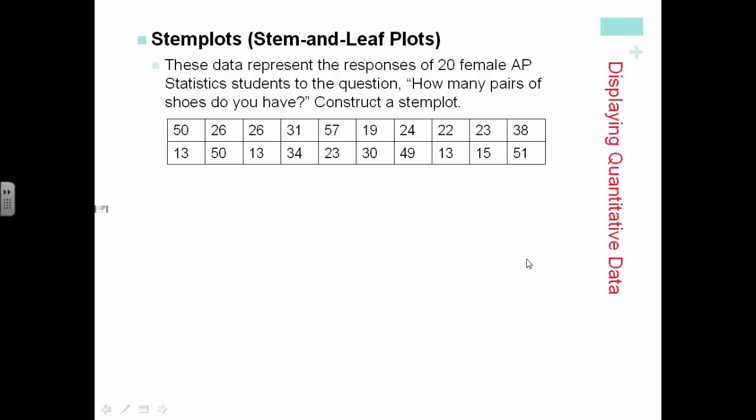Here's data that represent the 20 responses of female AP statistics students when asked, how many pairs of shoes do you have? We have our stems, which are 1 through 5.